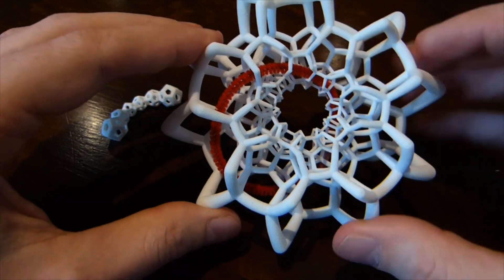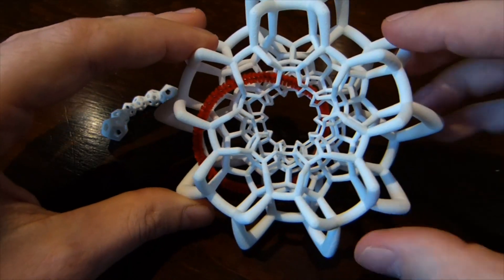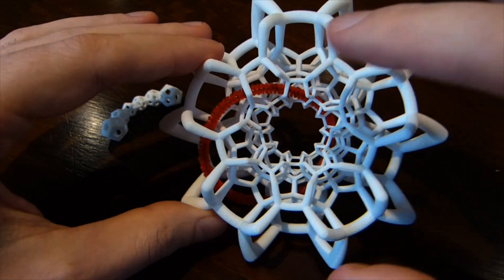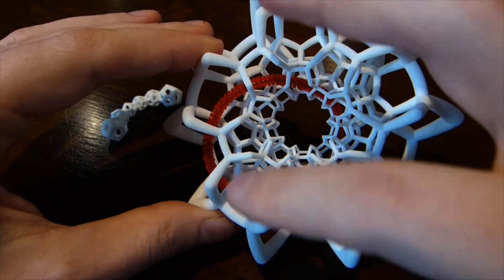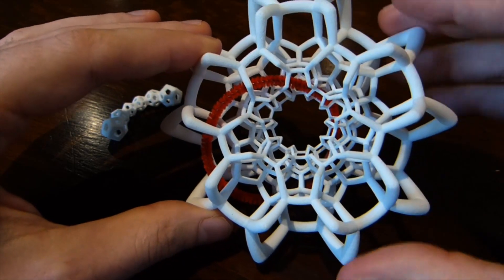And it turns out that we can sort of see the five-fold symmetry here already. There's a total of five of these chains going around here.